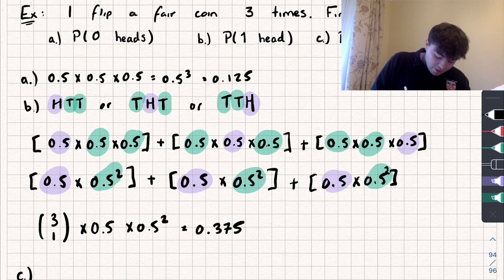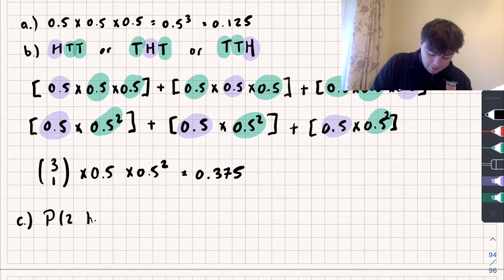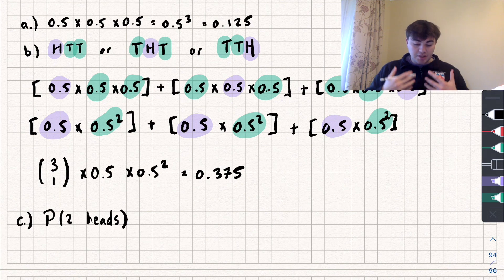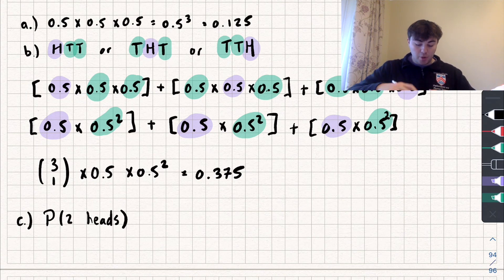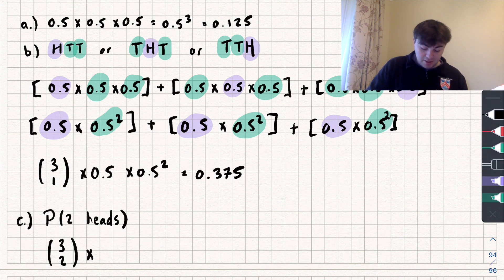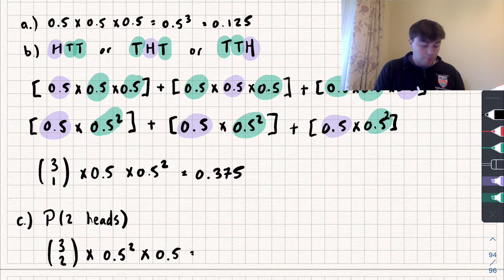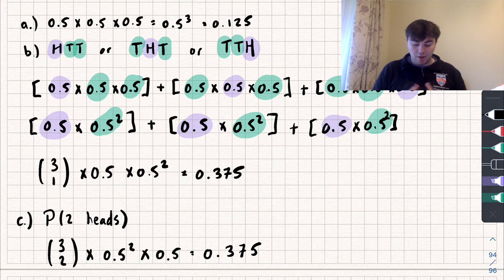Now for part c — the probability of getting two heads. Using the same logic, we look at the number of ways to arrange two heads and one tail, which is three choose two. We multiply by the probability of success squared (0.5²) for the two heads, and by the probability of failure (0.5) for the tail. So: three choose two × 0.5² × 0.5 = 0.375.